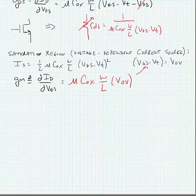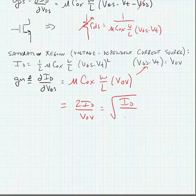We can do some algebraic manipulation to this expression to derive three different forms of Gm. So we can also, just with some simple manipulation and substitution, determine that Gm is equal to 2 times ID divided by Vov. It's also equal to the square root of ID divided by mu times Cox times W over L.